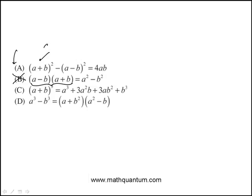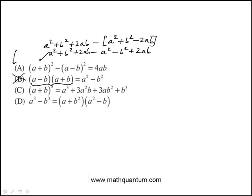This one we can do a quick expansion. This is A squared plus B squared plus 2AB. And then this in parentheses would be A squared plus B squared minus 2AB. If I distribute the minus here, I will be left with the 2AB terms because A squared minus A squared, these cancel out. I get 4AB. So that one is also true for all A's and B's.